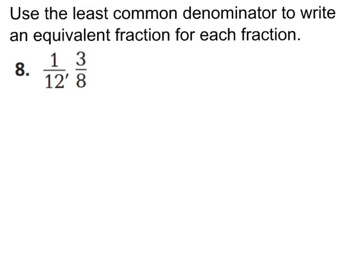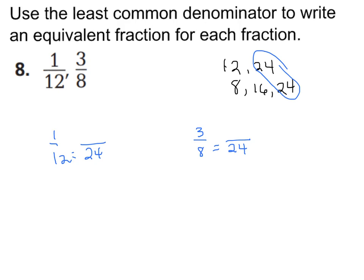Go ahead and pause the video for number 8. Try this one on your own and let's see if we agree. Find your equivalent fractions for each fraction using the least common denominator. Your denominators are 12 and 8. You should have said that your common denominator was 24. 1 twelfth is equal to 2 twenty-fourths, and 3 eighths is equal to 9 twenty-fourths. Because 12 times 2 is 24, so 1 times 2 is 2. And 8 times 3 is 24, so 3 times 3 is 9. Whatever you multiply your denominator by, you multiply the numerator by.